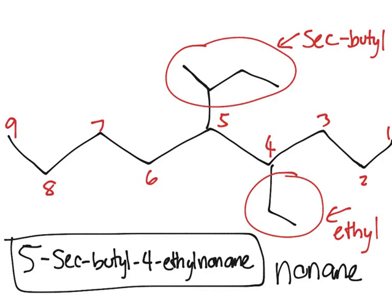And so that would be the name of the structure because the SEC is not taken into consideration when you're alphabetizing. So remember sec and tert are the exceptions. You could essentially disregard sec and tert when it comes to alphabetizing and just look at what's after that.